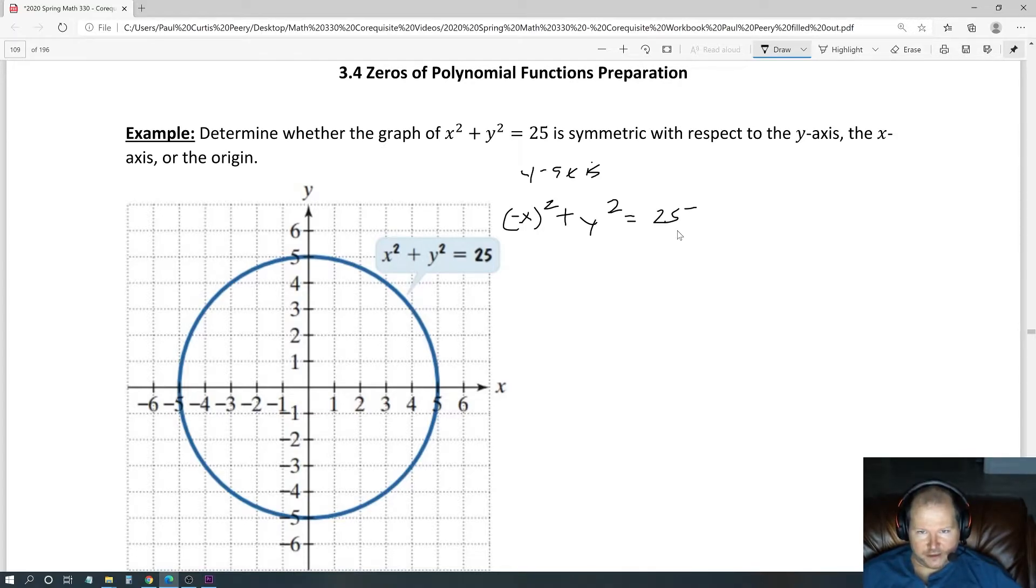Negative x squared is a positive x squared, because a negative times a negative is positive. And we were able to get back the original equation, so check.